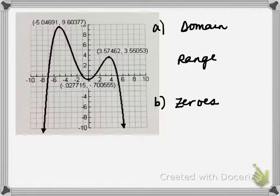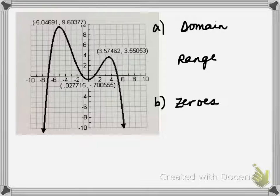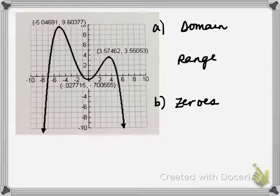For this problem, we're given a graph and we're asked to analyze this graph, beginning with the domain and the range. So remember, domain is asking for the set of all the possible x values, or the input values, and that means we're looking at the graph from left to right.